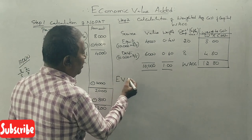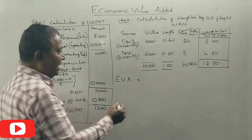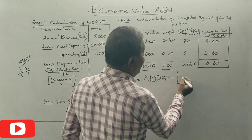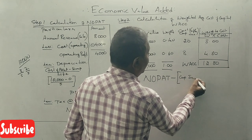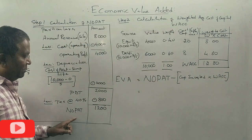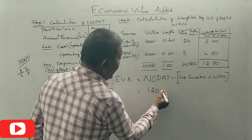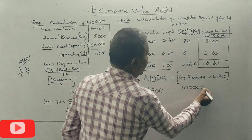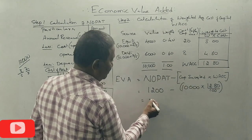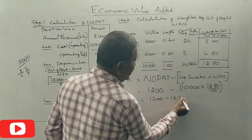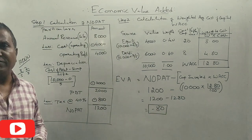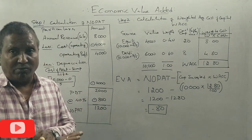Economic value added. EVA equals NOPAT minus capital invested into weighted average cost of capital. NOPAT is Rs. 1,200. Capital invested is Rs. 10,000. WACC is 12.8 divided by 100. So EVA equals 1,200 minus 1,280 equals negative Rs. 80. This is a negative economic value added.